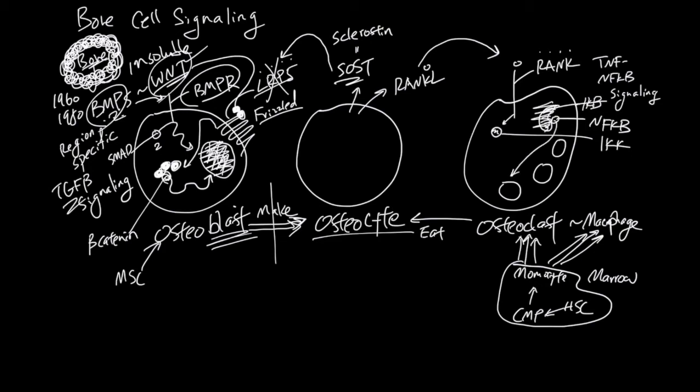So RANKL binds to RANK receptor, RANK receptor activates IKK, IKK gets rid of IKB, and NF kappa B is now free to access these nucleuses to change the gene expression of osteoclasts. As a result of this change, the osteoclasts will increase its eating activity to recycle some of the bone cells.